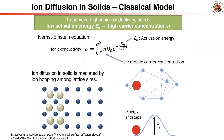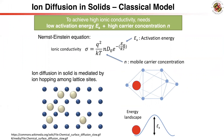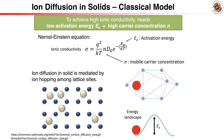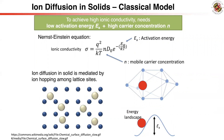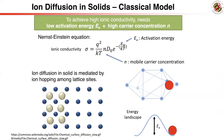At the atomic scale, ion diffusion happens through the hopping of ions from one site to another. During the hopping of an ion, it goes through an energy barrier. Having a low energy barrier is critical to achieving fast ion diffusion and high ionic conductivity.